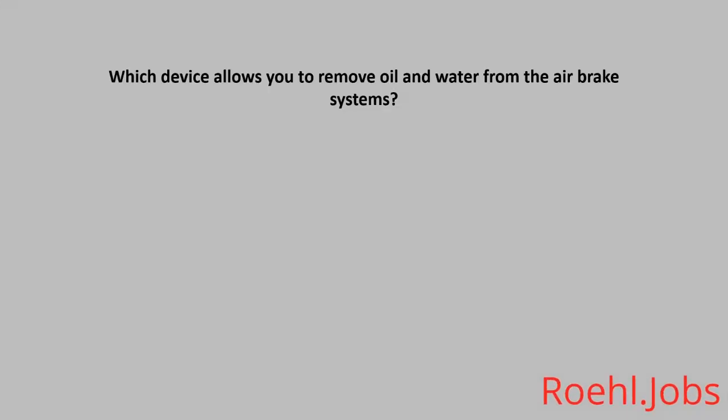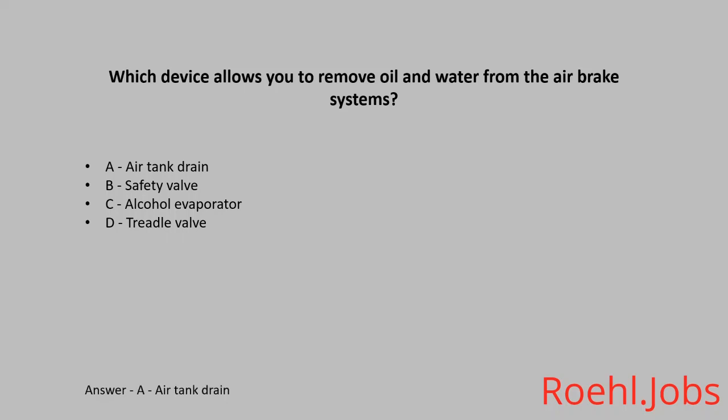Which device allows you to remove oil and water from the air brake systems? A. Air tank drain. B. Safety valve. C. Alcohol evaporator. D. Treadle valve. The answer: A. Air tank drain.